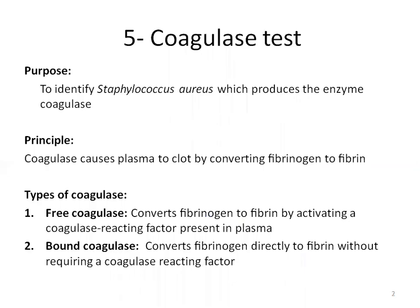Let's start with the coagulase test. This test is used to identify Staphylococcus aureus, which produces the enzyme coagulase. Coagulase causes plasma to clot by converting fibrinogen to fibrin. Two types of coagulase are produced by most strains of Staphylococcus aureus. Free coagulase converts fibrinogen to fibrin by activating a coagulase-reacting factor present in the plasma, and is detected by clotting in the tube test.